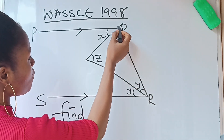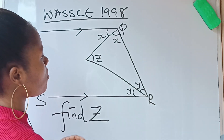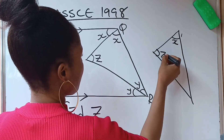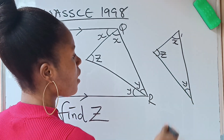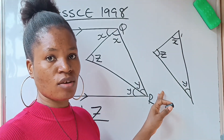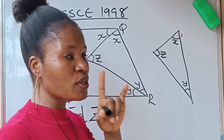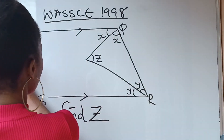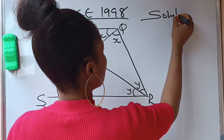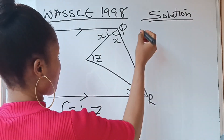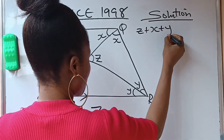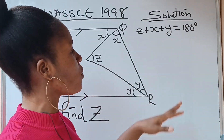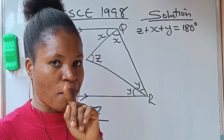The first thing we need to notice is that if you draw this particular triangle — triangle XZY — the sum of angles in a triangle will give us 180 degrees. So our first equation is: z plus x plus y is equal to 180 degrees. The reason: the sum of angles in a triangle equals 180 degrees.